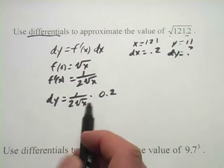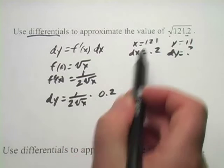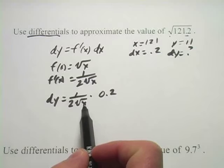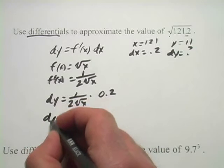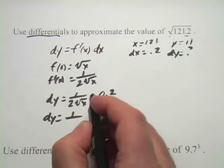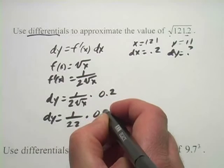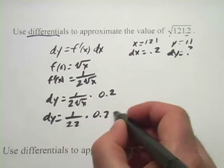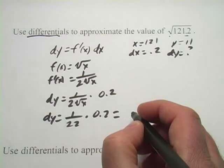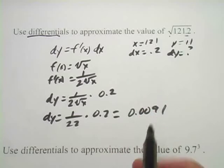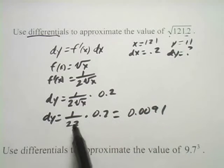And all I have to do is plug in our x value here, so x is 121, so I get 1 over 2 times the square root of 121. So dy is 1 over 2 times 11 is 22, times 0.2, and that is about 0.091, something like that. So that's our change in y.